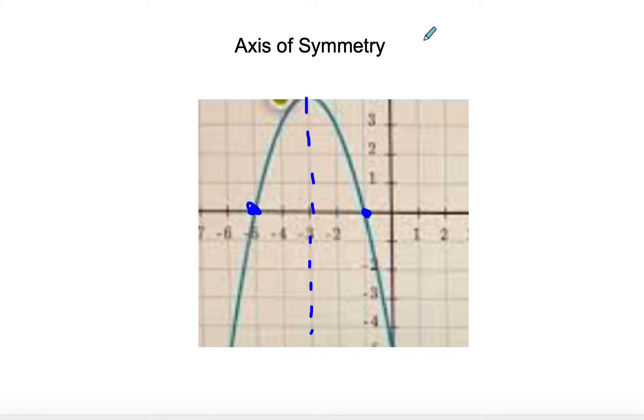And that axis of symmetry would be x equals negative 3. Now, some of you forget to put the x in front of it, but it is a vertical line, so you've got to make sure that you have the x in front of it.